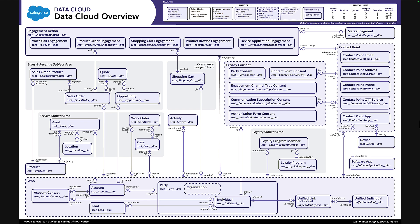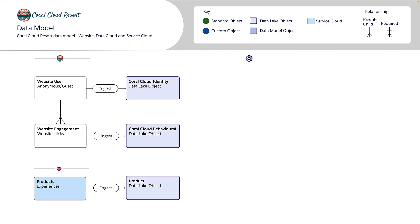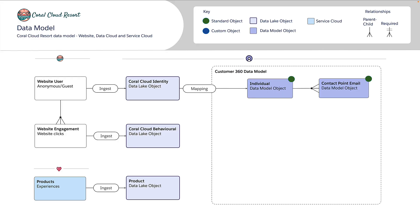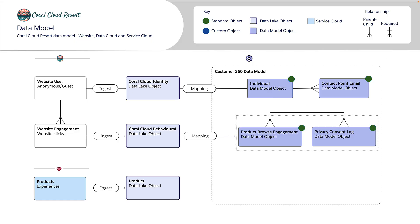Let's take those specific objects and apply them to our data model. With our understanding of the Customer 360 Data Model, we now map identity to Individual and Contact Point Email, behavioral information to Product Browse Engagement, and I've also added Privacy Consent Log for when a website user consents or opts in for us to track their activity. Finally, we're mapping product information — the experiences at each resort — into the Product data model object. I've kept the data mappings simple on purpose, but feel free to use different standard or custom objects if your structures are more complex.